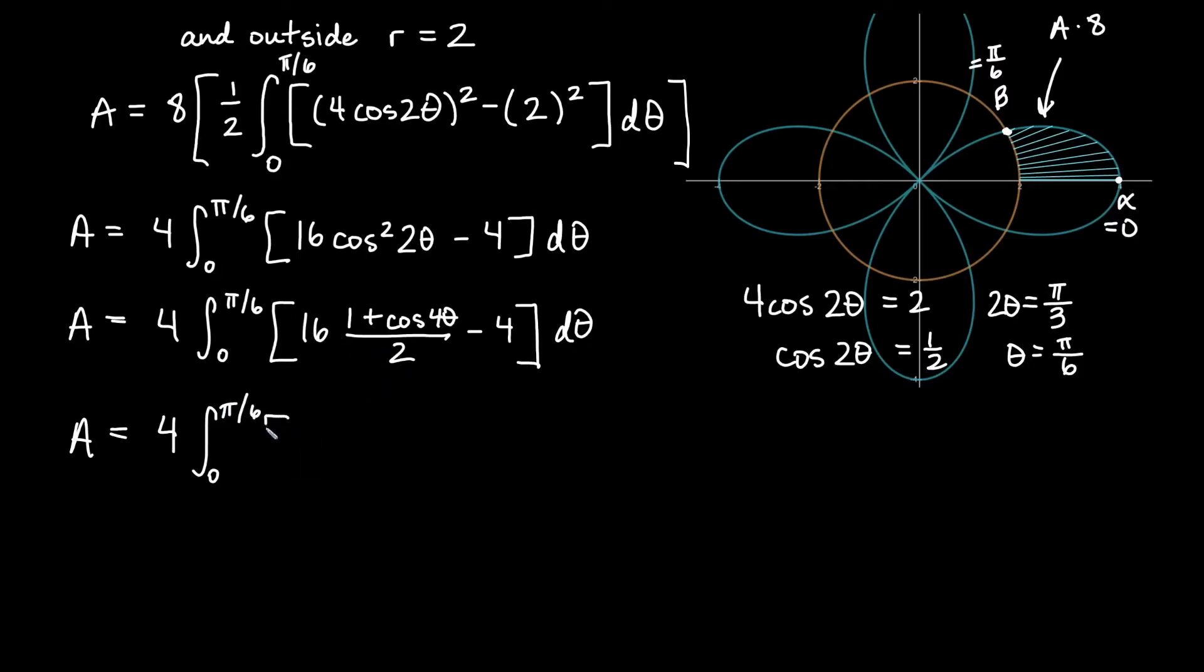Let's go ahead and say from 0 to pi over 6 times 4 here. So this 16 over 2 here will be 8. So 8 times 1 plus 8 times cosine 4 theta minus 4. We can go ahead and combine like terms one more time. So we have 4 integral from 0 to pi over 6. We will have finally 4 plus 8 cosine 4 theta. I think we've done enough simplifying with this. Let's get to the integrating.